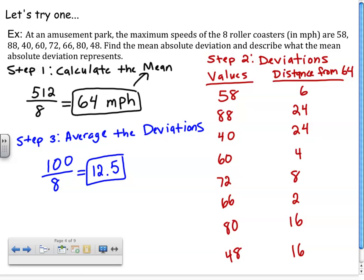That value, 12.5, that is your mean absolute deviation. That means that on average, the values in our data set are 12.5 miles per hour away from the average, which is 64.